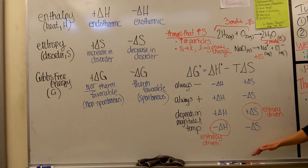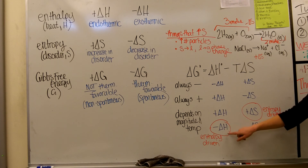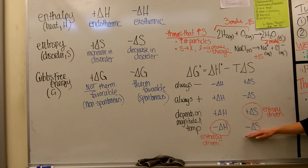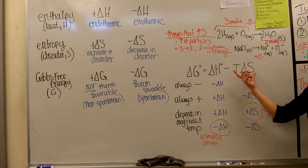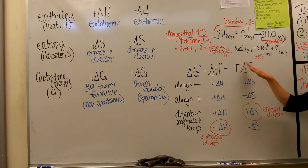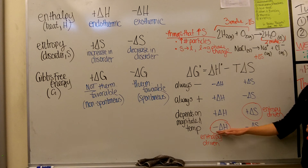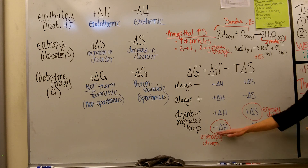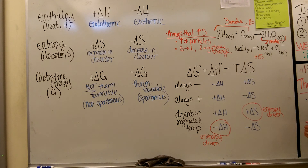The other scenario is when both signs are negative. In this case, it's the negative delta H value that's driving the reaction, so we'd say it is enthalpy driven. A negative delta S is not energetically favorable — subtracting a negative number means you're adding a positive number, which doesn't help make delta G negative. So if this reaction occurs, it's because it's very exothermic due to the negative delta H value. This one is more likely to be favorable at lower temperatures, because that reduces the significance of the T delta S term. That's an overview of the three variables and how they relate to each other in terms of thermodynamics.